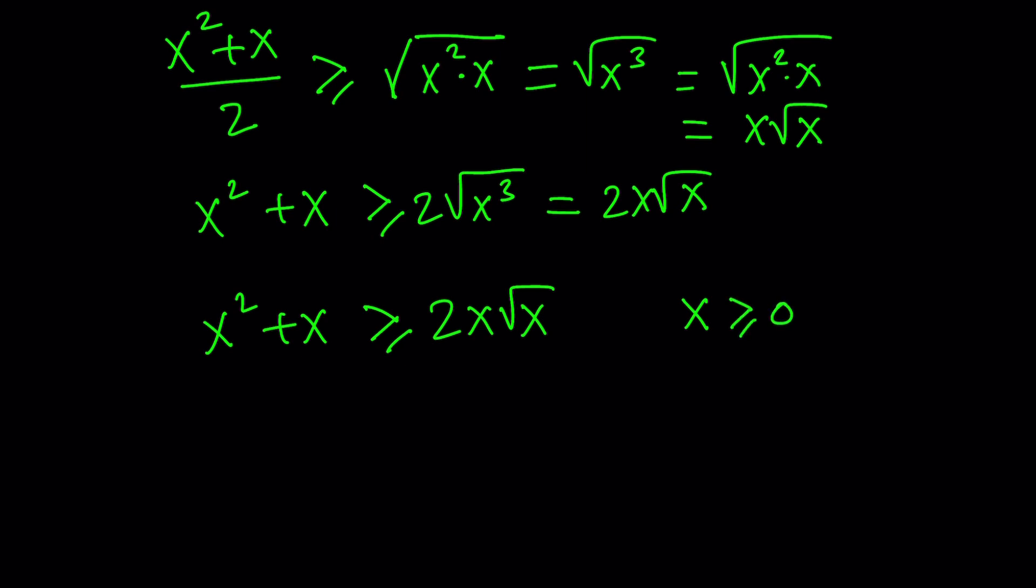You can test out some numbers, like pick a perfect square for X. Let's say X equals 9. 9 squared plus 9 equals 90, and 2 times 9 times 3 is 54. And definitely 90 is a winner. Left-hand side is always going to be bigger. But when is that an equality? We already talked about it, but I don't want to apply it to this case yet, because we're going to do that at the very end.